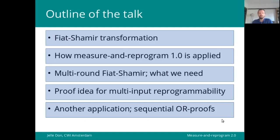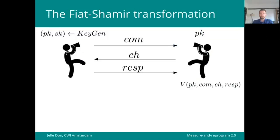For the rest of the talk, I'll give you a bit more detail about how the Fiat-Shamir transformation works, how the original result is applied to prove it's secure. Then we'll come to the motivation for this new work, namely multi-round Fiat-Shamir, and I'll discuss what we need to prove that secure. Then I'll give you the proof idea for this main result that we have, and I'll finish off by talking about yet another application in the sequential OR proofs.